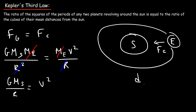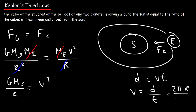The Earth is moving with constant speed around the Sun, so we use d = vt, meaning v = distance / time. Since the Earth travels in a nearly circular orbit, the distance around the circle is 2πr and the time is the period T. Therefore we can replace v² with (2πr/T)².